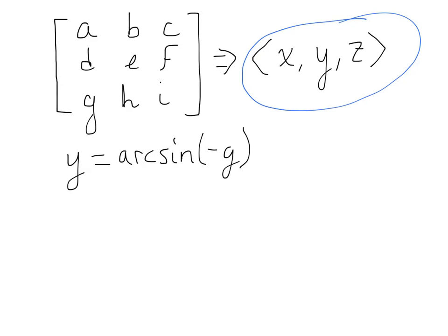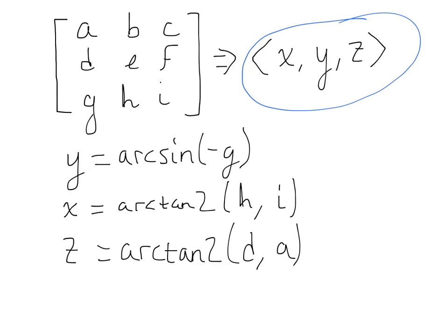You can find the x by taking the two-parameter arc tangent of h and i, h being your y and i being your x. You can find the z rotation by taking the two-parameter arc tangent of d and a. So, there's your short answer.